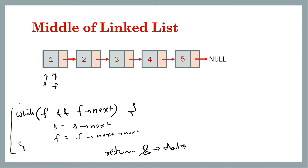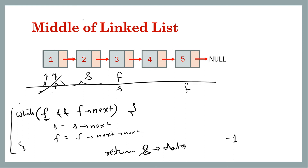We can also add a base case: if fast is null or head is null, return minus one. With both pointers starting at head, fast is valid and fast's next is valid, so move slow by one step and fast by two. Repeat again. Now fast is not null but fast's next is null, so we stop and return whatever value slow is pointing to — that is three.